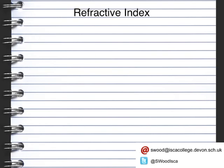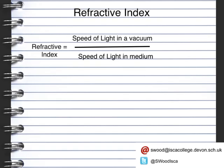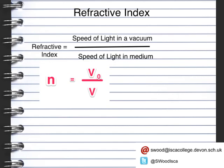The refractive index is something that all materials have, and you can work it out using this equation: the refractive index is equal to the speed of light in a vacuum divided by the speed of light in the medium. The symbols are: N for refractive index, V₀ for the speed of light in a vacuum, and V for the speed of light in the medium.